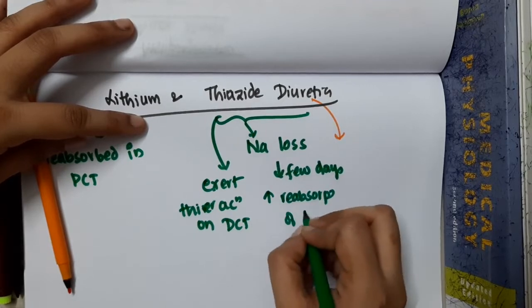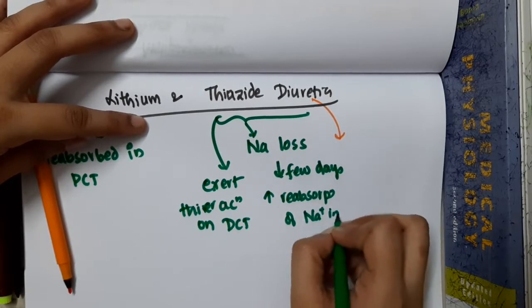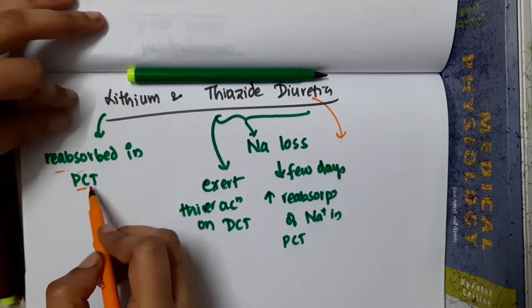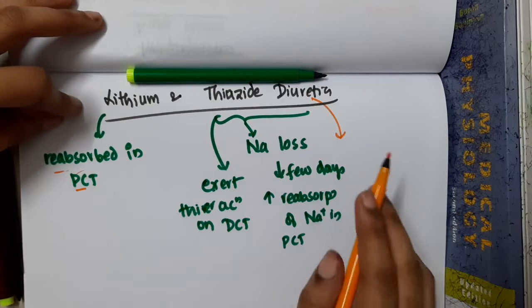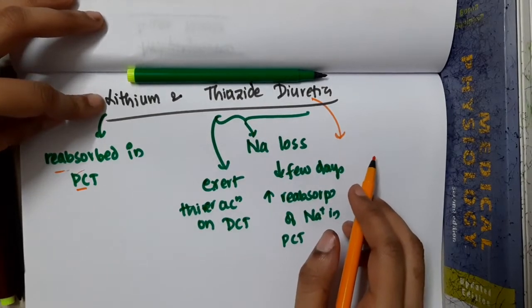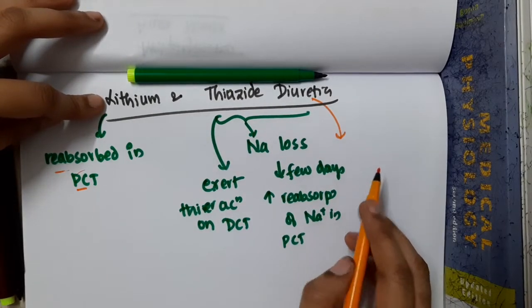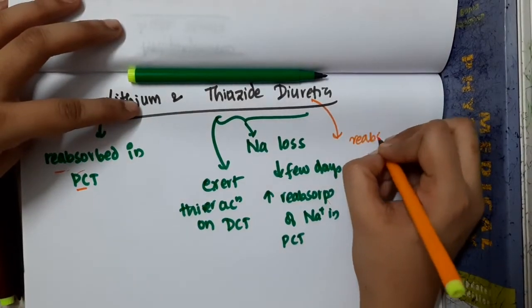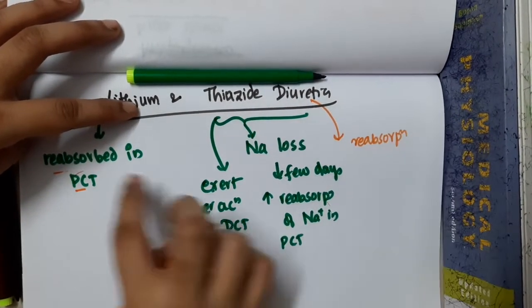Of sodium in the proximal convoluted tubule. And lithium is also reabsorbed in proximal convoluted tubule. So these thiazide diuretics, along with reabsorbing sodium, will think that lithium is also sodium.